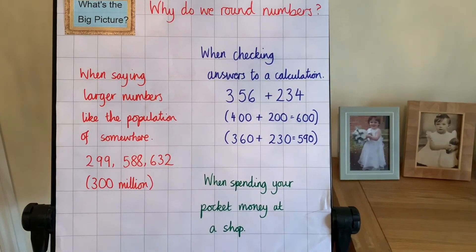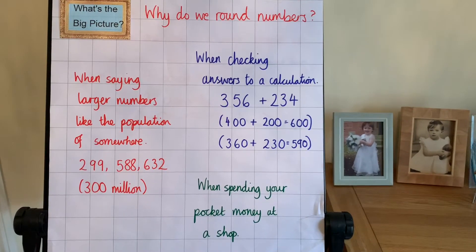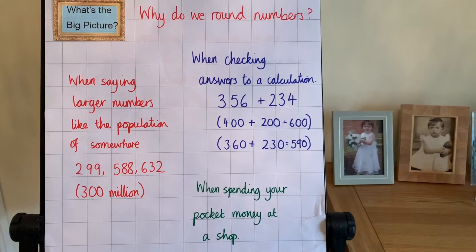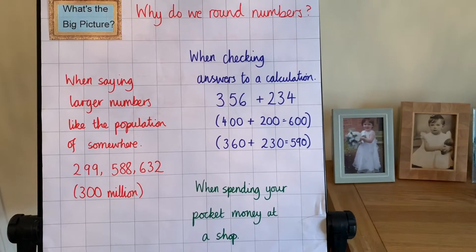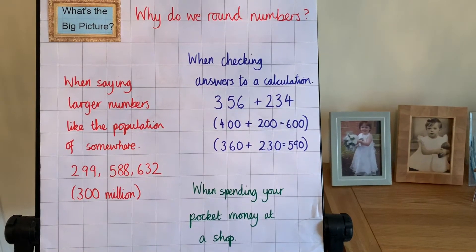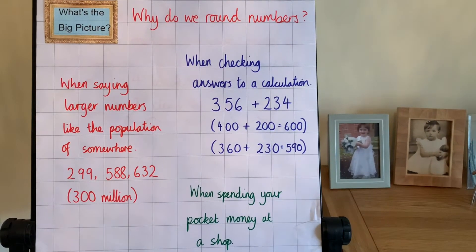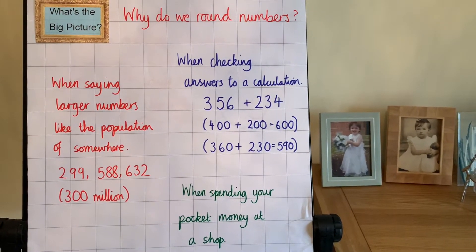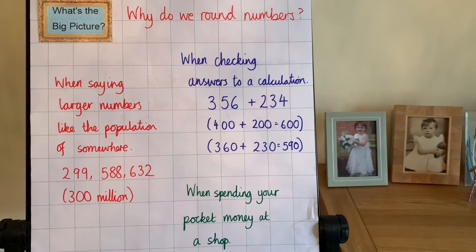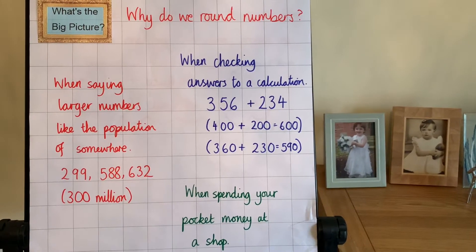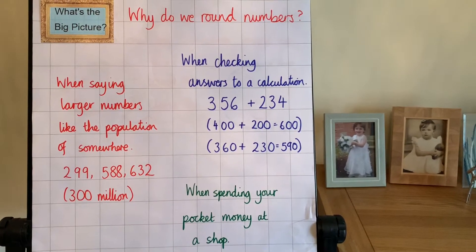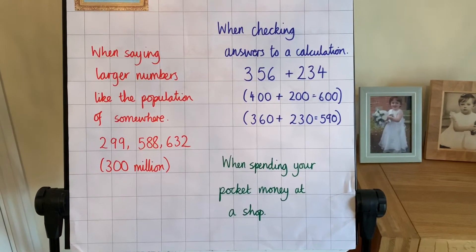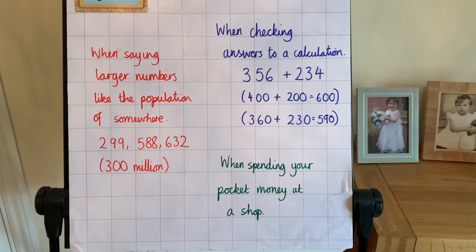You could use rounding to check answers to a calculation to see if you are right, if you're going to get in the rough area. So you could have 356 and 234. You could round to the nearest hundred, which would be 400 and 200, and then your answer will be around 600. Or you could round to the nearest ten — 360 add 230 — and your answer should be around 590. Or when you're spending your pocket money at a shop, you wouldn't want to get to the till and not have enough, would you? So you could round things up to the nearest pound as you went along.